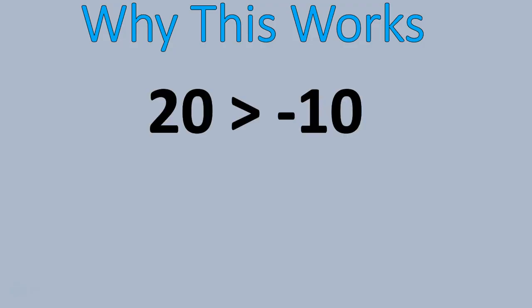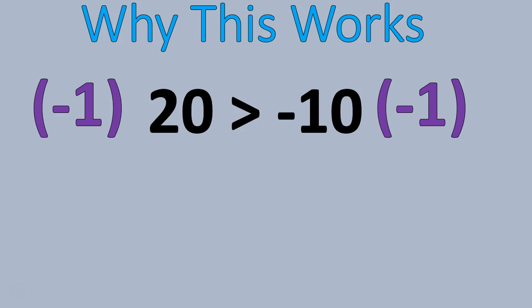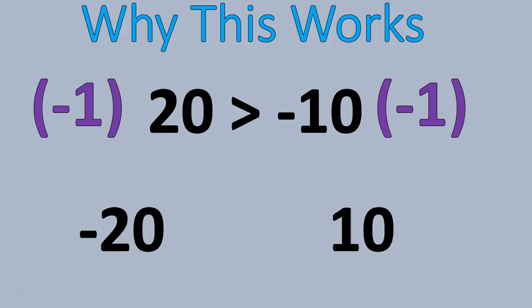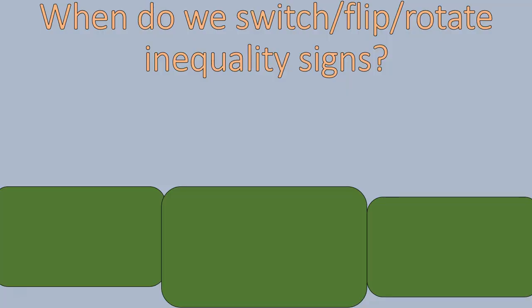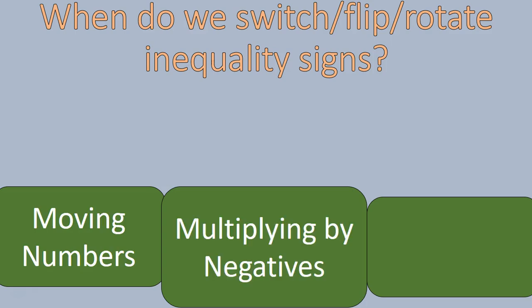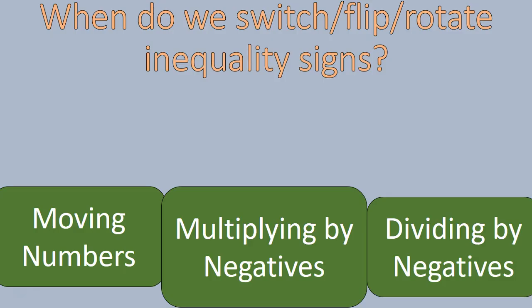Let me show you why this works. Start with a simple true inequality: twenty is greater than negative ten. If I multiply both sides by negative one, twenty becomes negative twenty and negative ten becomes positive ten. To make this statement true now, you definitely have to switch the sign — and that's why this works in every case. Quick recap: the three times you switch, flip, or change the sign of an inequality are: moving the numbers, multiplying by negatives, or dividing by negatives.